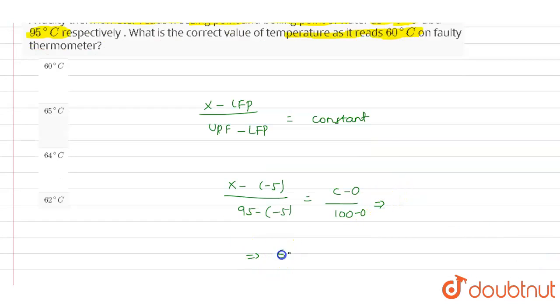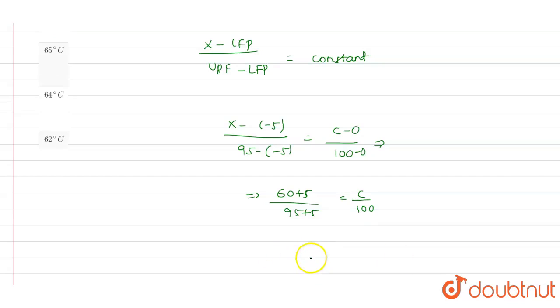By simplifying this we will get the equation as 60 plus 5 divided by 95 plus 5. That will be equals to C divided by 100. And the value of C we will get as 65 degrees Celsius.